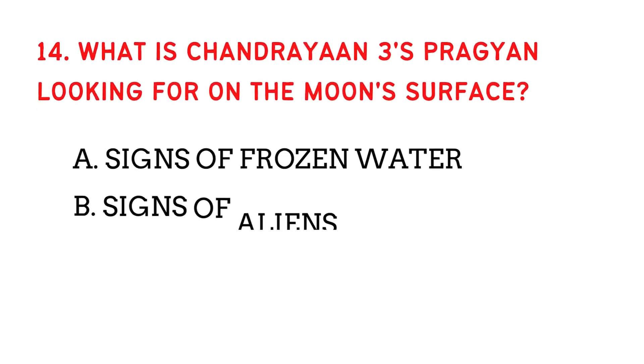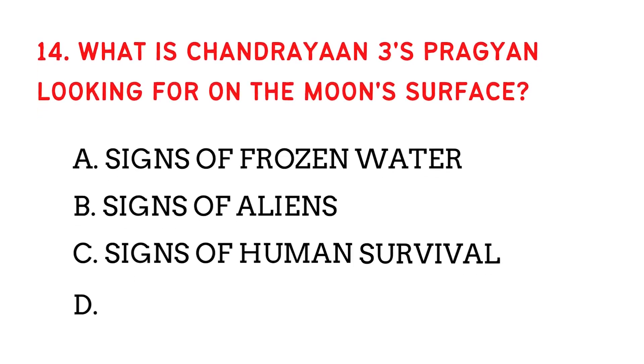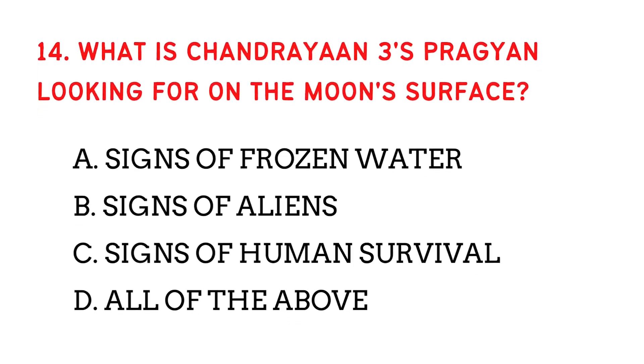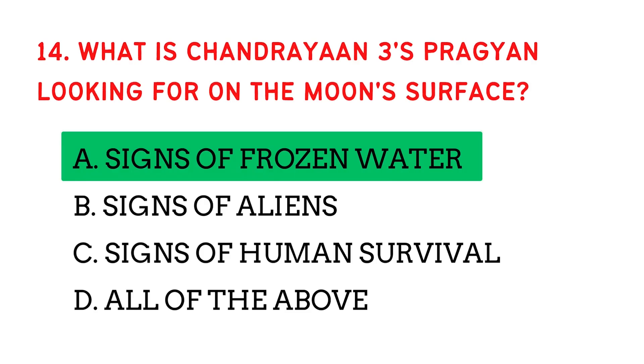What is Chandrayaan 3's Pragyaan looking for on the moon's surface? The answer is signs of frozen water.